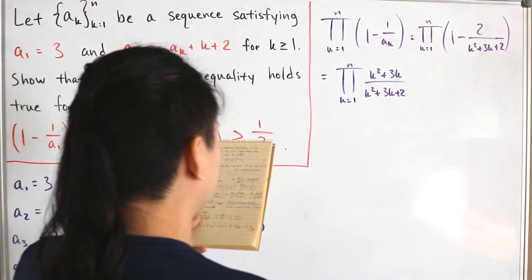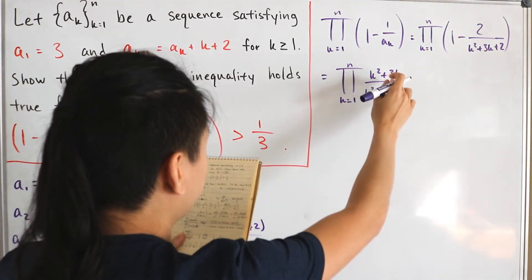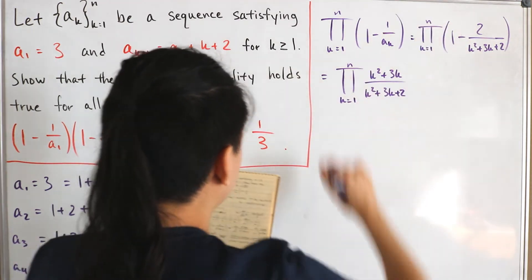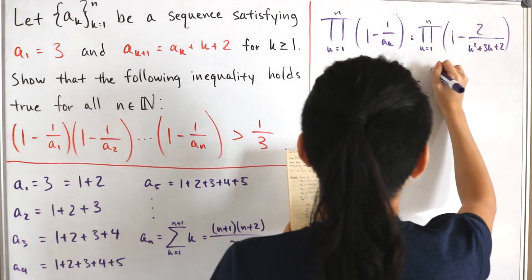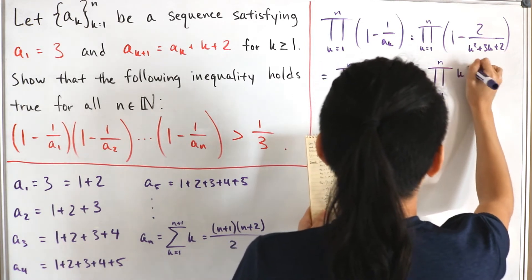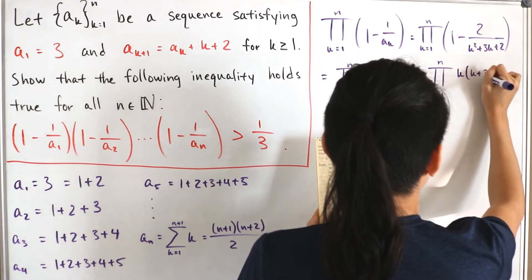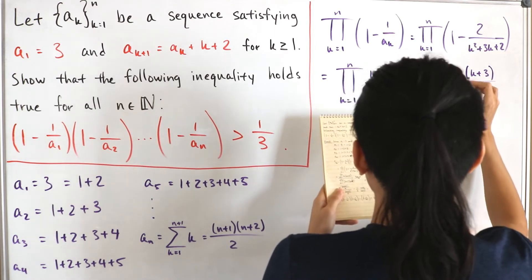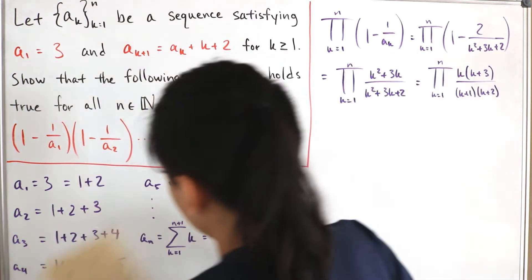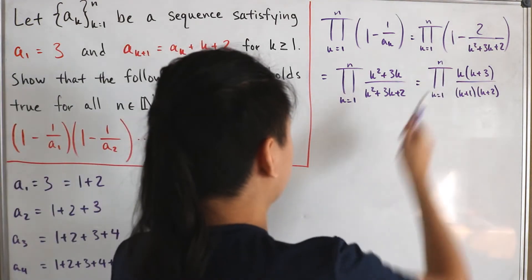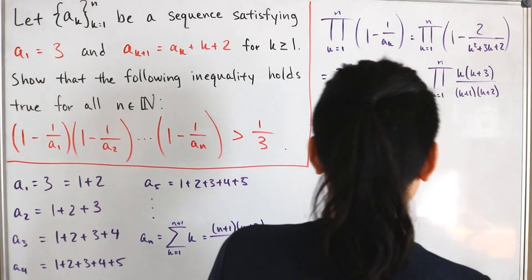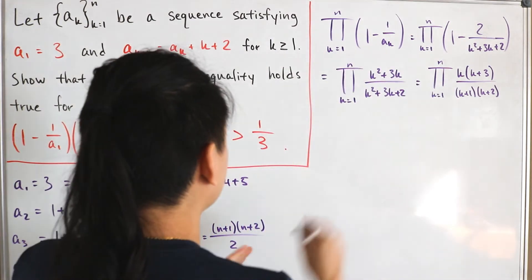We can do a little factoring: the numerator factors as k times k plus 3, and the denominator factors as k plus 1 times k plus 2. So the partial product from k equals 1 to n becomes the product of k times k plus 3, divided by k plus 1 times k plus 2. We can then write this as the product of the numerator divided by the product of the denominator.